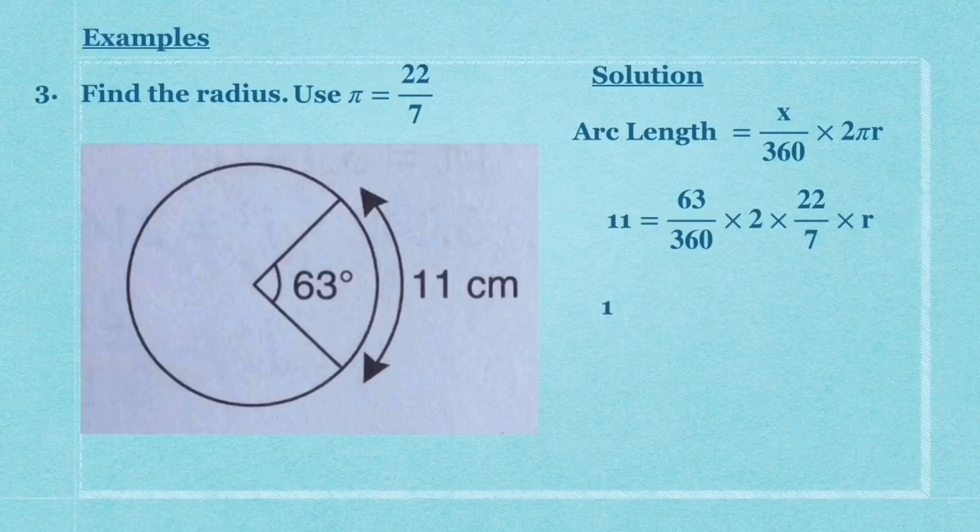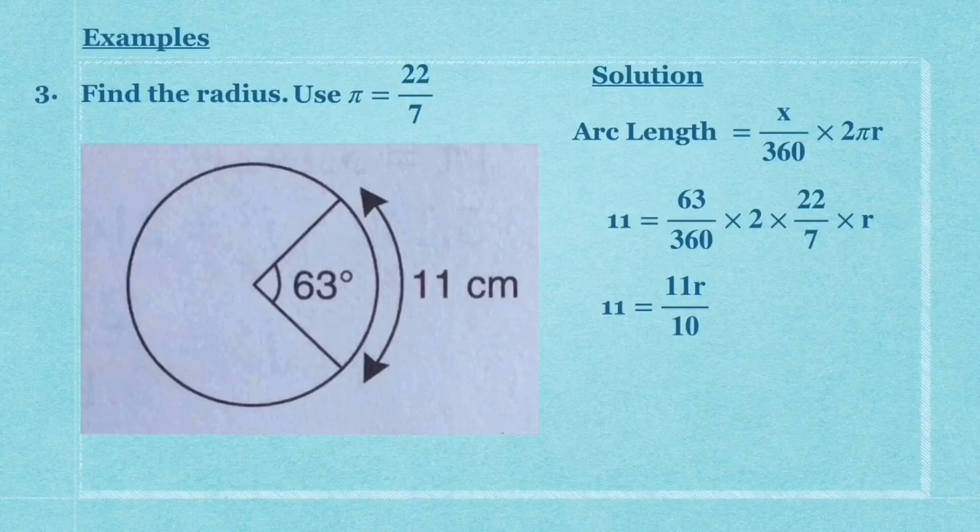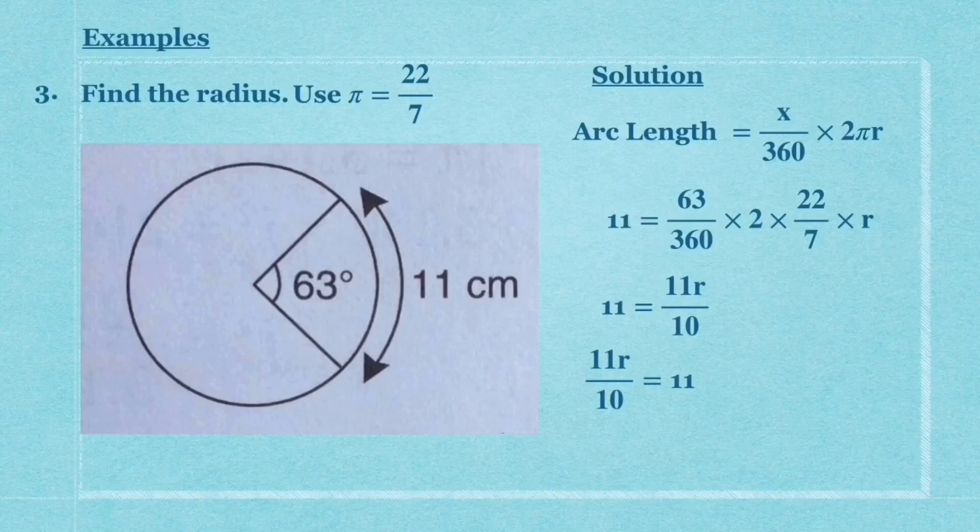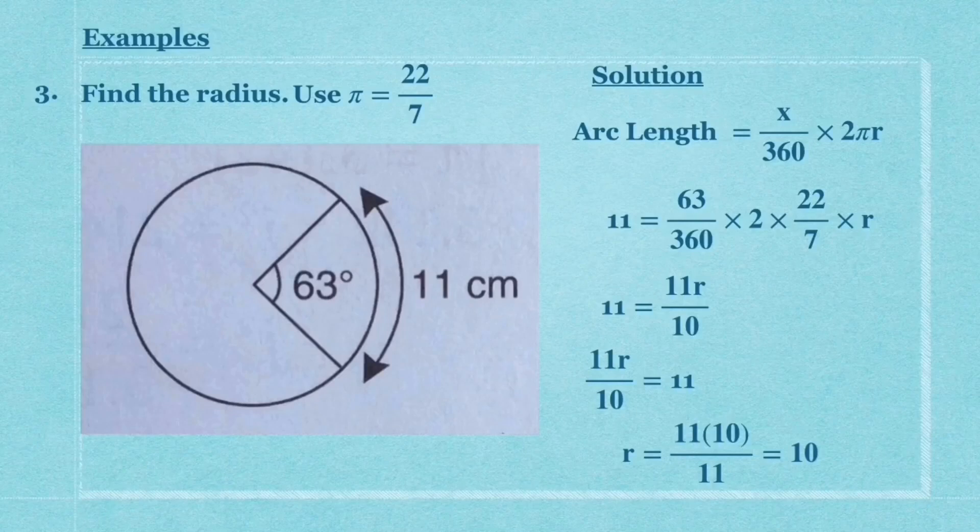Use your calculator: 63/360 × 2 × 22/7 will give you 11/10. Now swap the position but don't change the sign. You get 11r/10 = 11. Cross multiply: r = 11 × 10/11. Cancel the 11, so you get r = 10 cm.